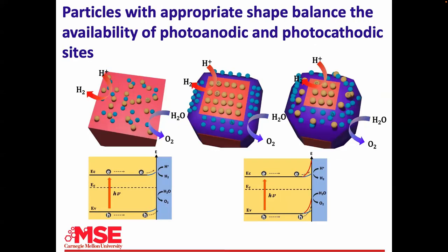How do we interpret this? If you only have cathodic surfaces, you can only reduce things — it's not good for water splitting. No matter how good a cathode you have, you can't split water unless you have a good anode. You have to balance the two, and it's not just a simple balance by area. The oxidation reaction is harder than the reduction reaction, so you actually need more of the anodic surface. About 75% anodic surface area is optimal for these particles.